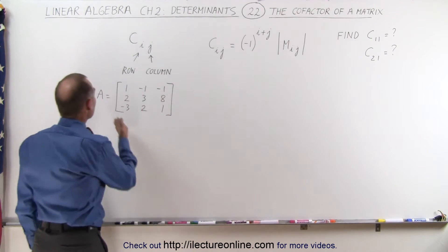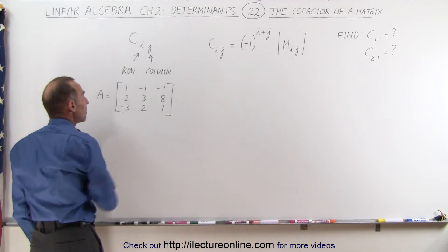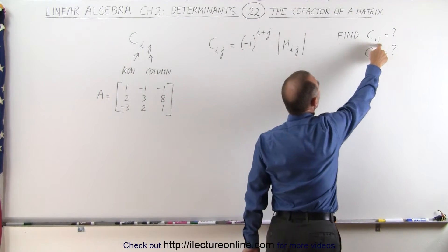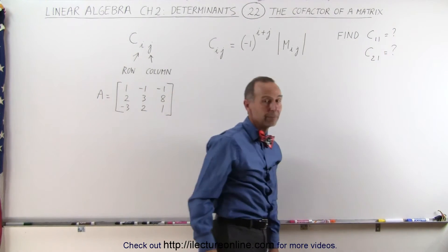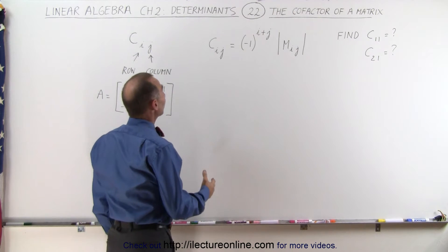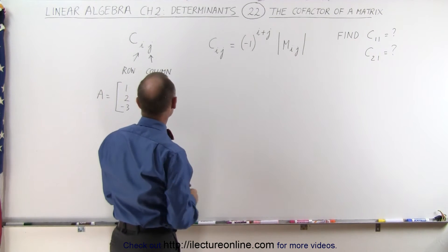Here we have the matrix A, which is the 3 by 3 matrix, and we're going to find c11 and c21. Well, first of all, what we need to find is we need to find m11.